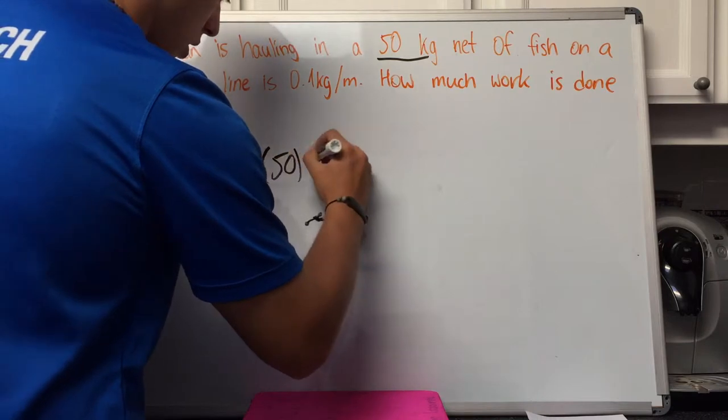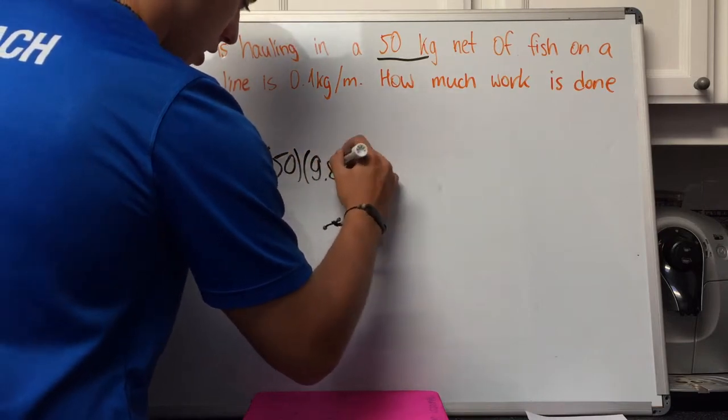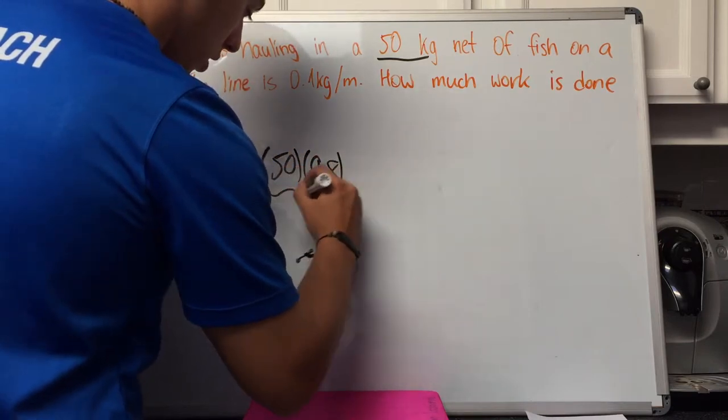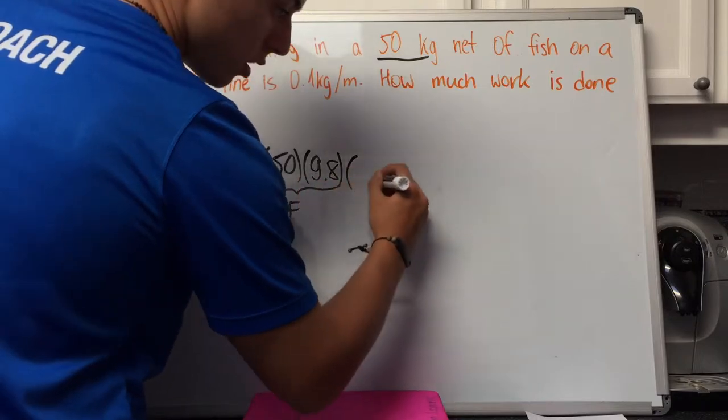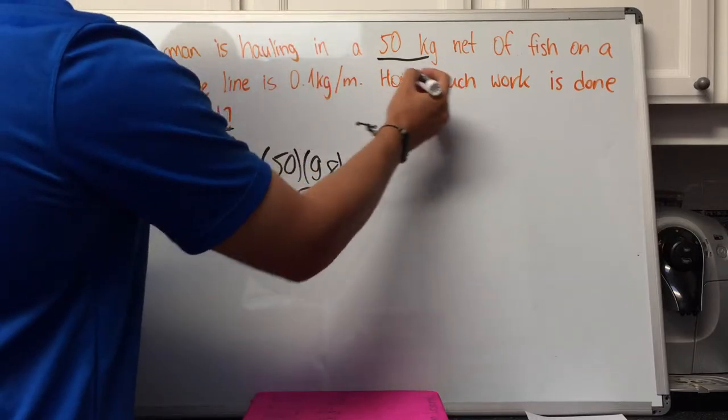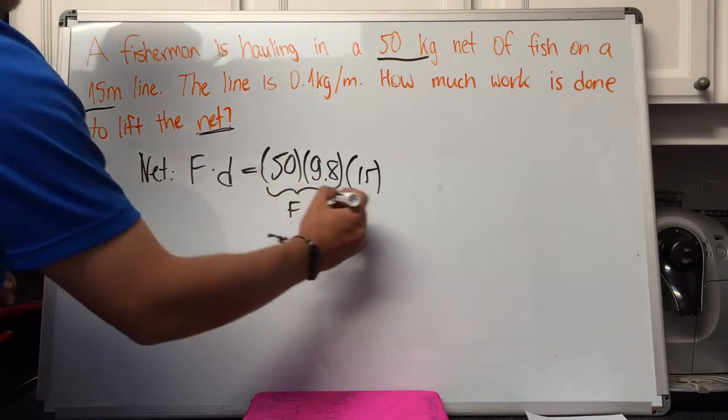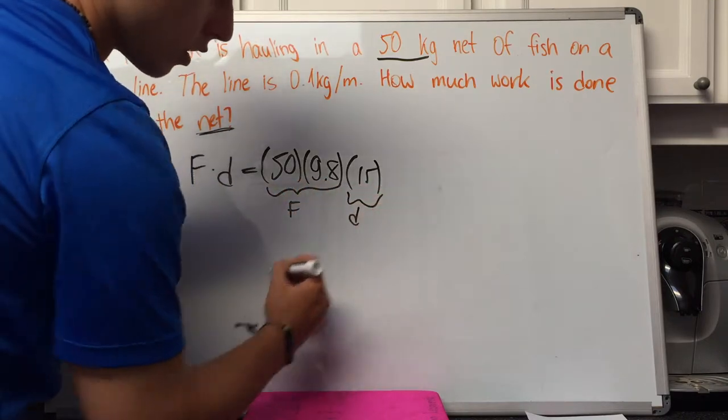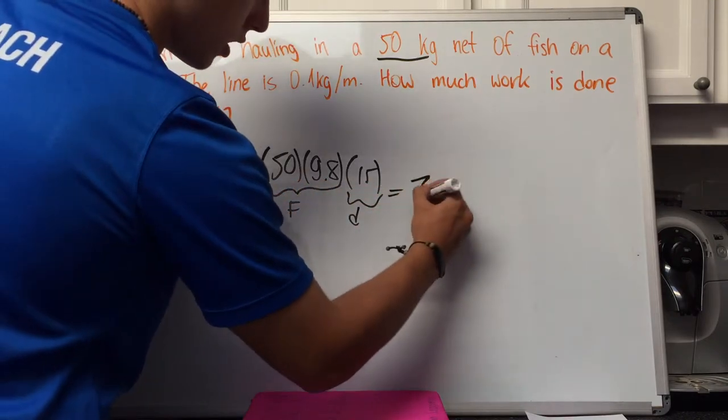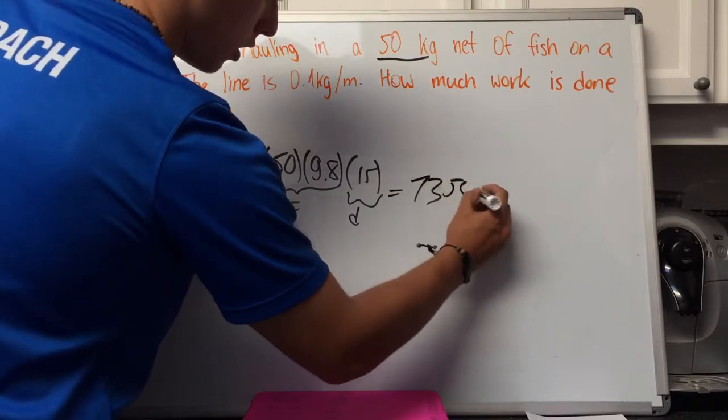So 50 kg times 9.8, that's the force, times 15, the distance. That equals 7,350 joules.